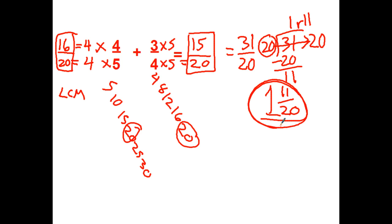By the way, if I'm only adding up two fractions and they're both less than 1, I know this number right here can never be over 1. So when I'm dividing, I don't even have to think about whether it's going to go in there 2 or 3 or 4 times — it's always going to be 1.